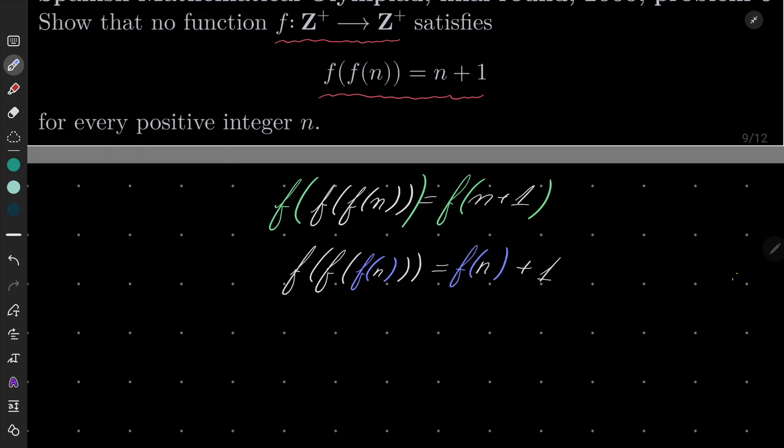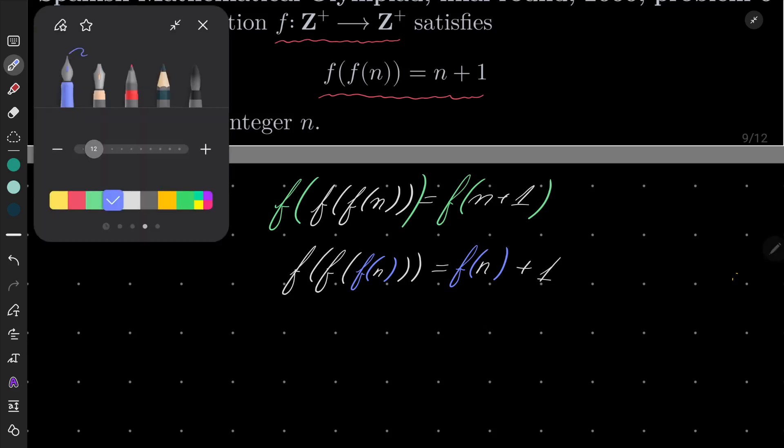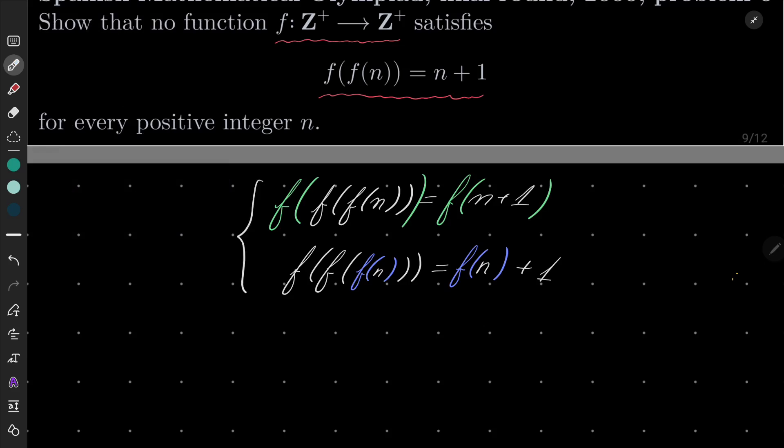Okay, so in our first equation, we have applied function f on the outside, and in our second equation I have changed n to f(n). This equation should still be satisfied. Now notice that these two left-hand sides are the same. They are the same function.